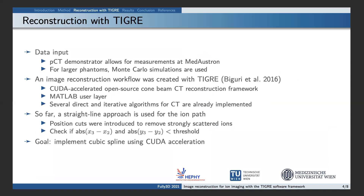Our imaging data is partly obtained from an ion CT demonstrator at MedAustron. For large phantoms, we use data generated with Monte Carlo simulations. For image reconstruction, we use the TICRA toolbox, which is an open source CUDA accelerated cone beam CT reconstruction framework that includes iterative and direct algorithms for CT image reconstruction. To use the framework without adaptation for ion CT, we used a straight line approximation for the ion path. Furthermore, we used position cuts to remove strongly scattered ions from our data.